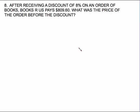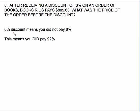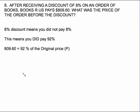Now these next ones get a little more difficult. After receiving a discount of 8% on an order of books, Books R Us pays $809. What was the price of the order before the discount? There are several ways to do this problem. If it's an 8% discount, you did not pay 8%. That means you did pay 92%, because 8 plus 92 gives the total of 100%.